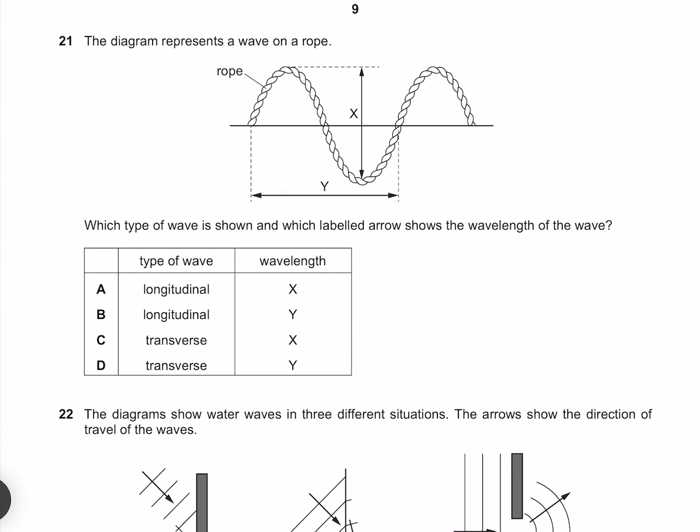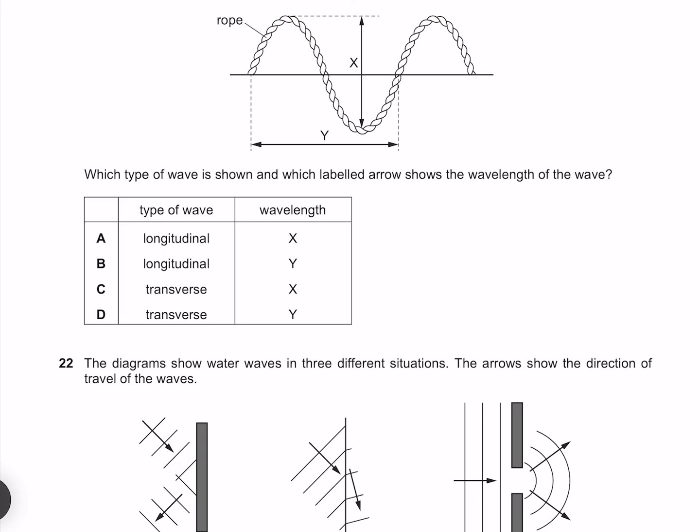The diagram represents a wave on a rope. Which type of wave is shown, and which labelled arrow shows the wavelength of the wave? The wave shown is a transverse wave because our displacement is perpendicular to the velocity of the wave, and our wavelength is depicted by Y. So our answer must be D.